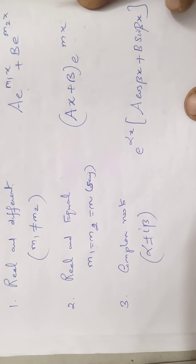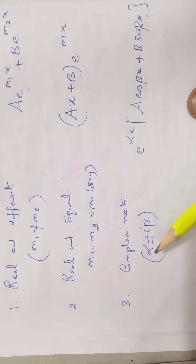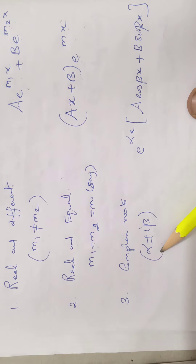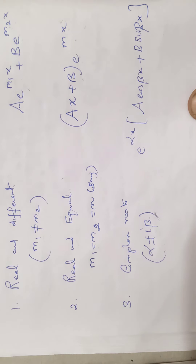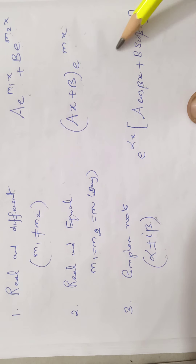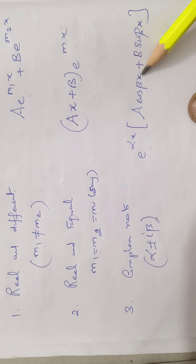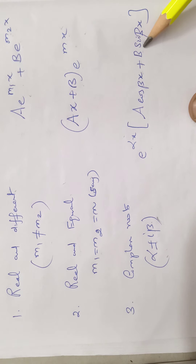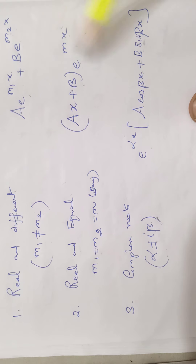Third case: complex roots. Complex roots means alpha ± i·beta, where alpha is the real part and beta is the imaginary part. The complementary function is e^(αx)·(a·cos(βx) + b·sin(βx)). These three are the complementary functions of the given equation.